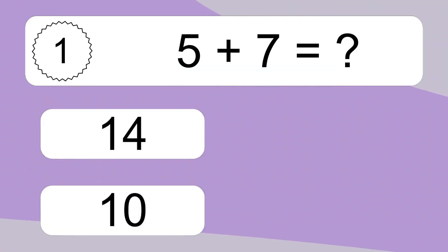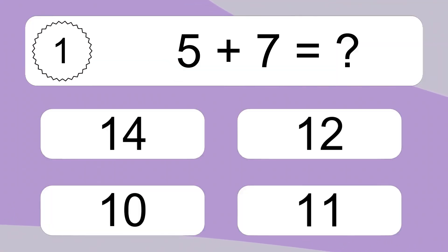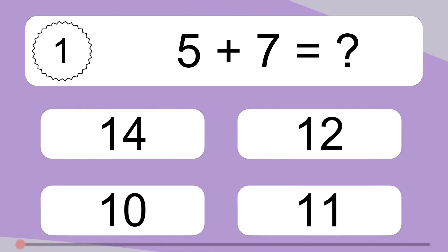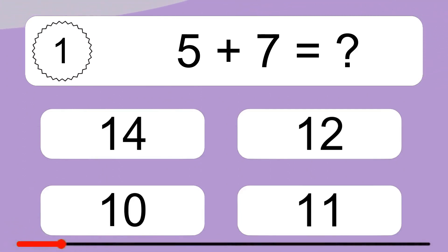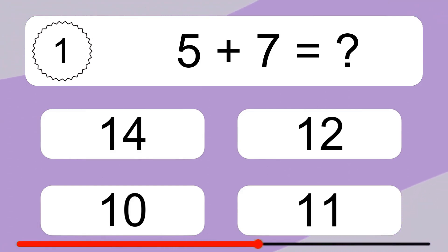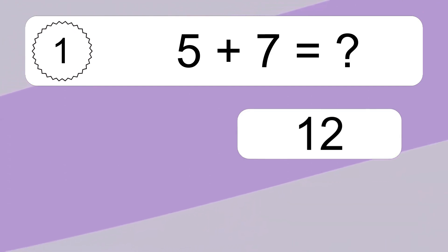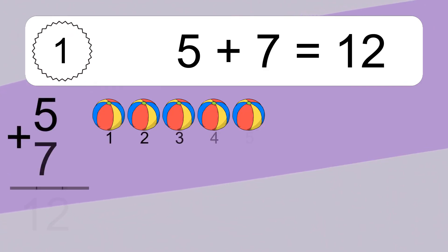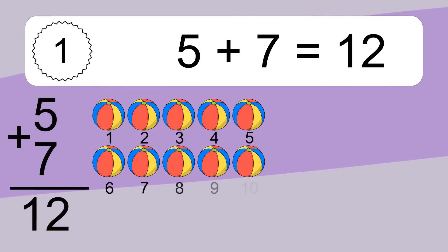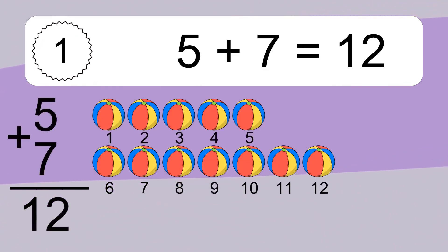5 plus 7 equals what? 5 plus 7 equals 12.